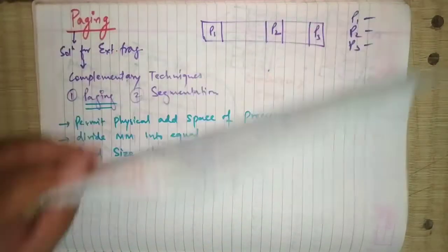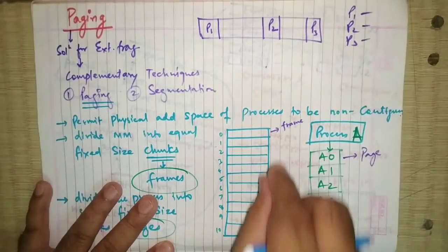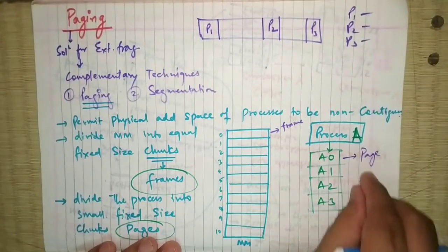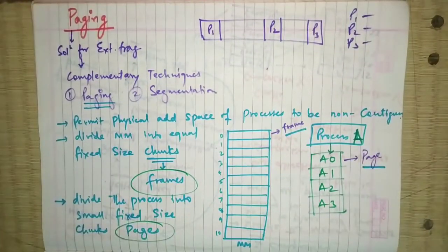As we have seen in the earlier video, we have done paging, which is the non-contiguous allocation scheme, where we are permitting the process to be non-contiguous. It means that we can place a single process at different locations. In paging, we divide the main memory into a number of chunks called frames, and we divide the process into chunks of equal fixed size, called pages.